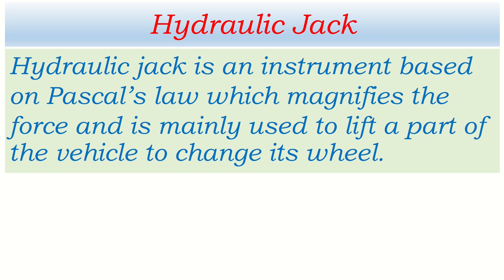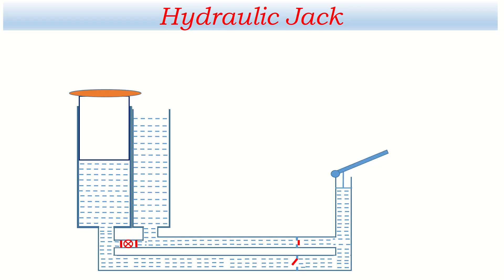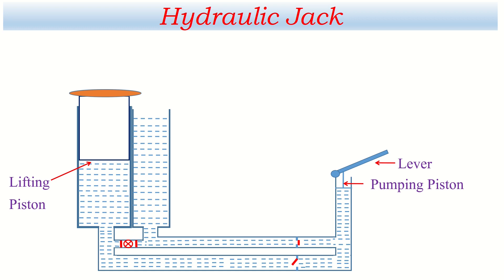How is it constructed? This is the simple construction of a hydraulic jack. It consists of two pistons: one is called the pumping piston and another is called the lifting piston. The pumping piston is very small, but the lifting piston is comparatively very large. There is a lever placed over the pumping piston which can press it downward. Another important part is the oil reserve, and oil is filled in all parts of the hydraulic jack.